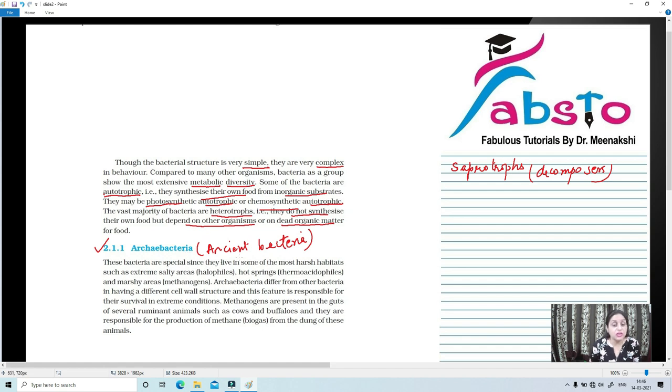These bacteria are special since they live in some of the most harsh habitats. Harsh means which are not suitable for normal living. What are the harsh habitats? Such as extreme salty areas. Those which live in very salty areas, what are they called? Halophiles. Halo means salt and phile means loving. So, these are salt-loving bacteria. They can be present in hot springs. Those which live in hot springs are called thermoacidophiles. Thermo means hot, acido means acid, and phile means loving. They love heat and highly acidic conditions. So, thermoacidophiles thrive in hot springs and highly acidic conditions. And some are present in marshy areas. Marshy means swampy areas. And these are known as methanogens.